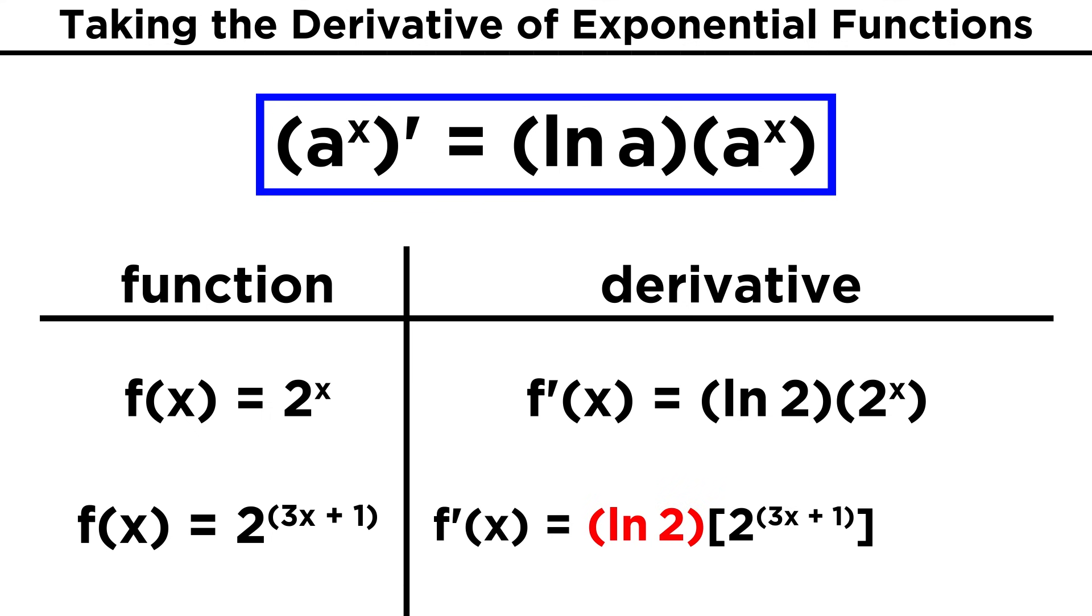If we take the derivative of this, just like before, we have the natural log of two times the original function, two to the quantity three X plus one. But now we multiply by the derivative of this exponent, which is three, and we can then put the three up front.